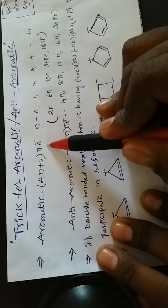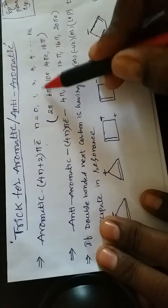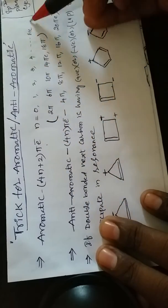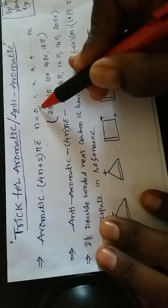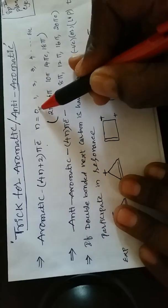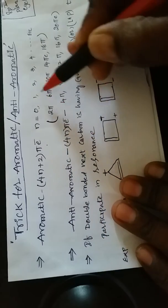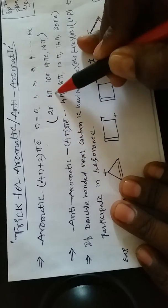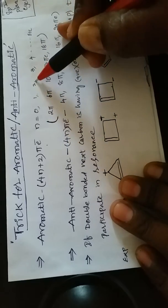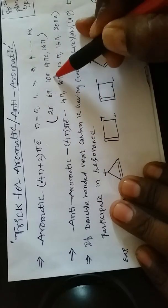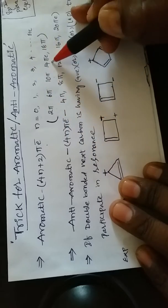For aromatic compounds, the formula is 4n+2 pi electrons, where n = 0, 1, 2, 3, 4, etc. When n=0, that gives 2 pi electrons. When n=1, that is 6 pi electrons. When n=2, that is 10 pi electrons. When n=3, that is 14 pi electrons.